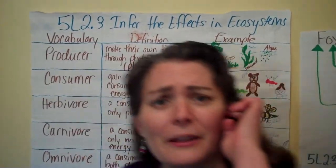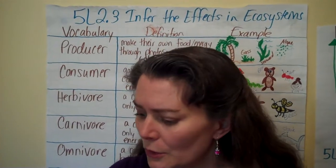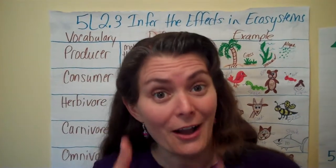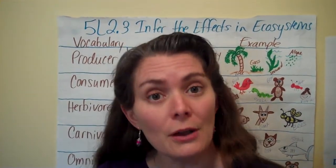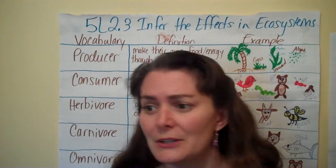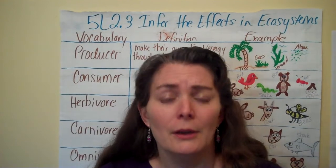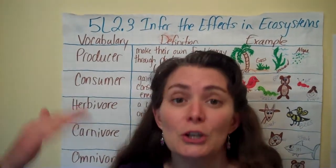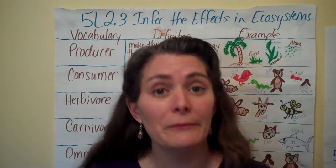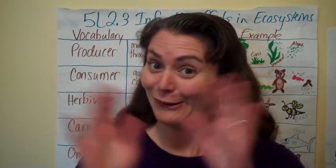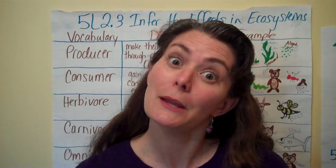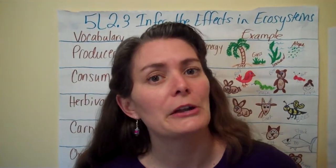We had some vocabulary that we covered back then that was very critical and important, and you guys rocked 5L2.1 and 5L2.2 on your school net assessments. However, one area that we struggled in was making those inferences on how animals would affect one another in those ecosystems — if one population decreased, what would happen to the other ones, which ones would increase and decrease? So we're going to be revisiting that, because we've already covered all the rest of our science standard content for the rest of the school year, and we want to clarify our understanding a little bit.